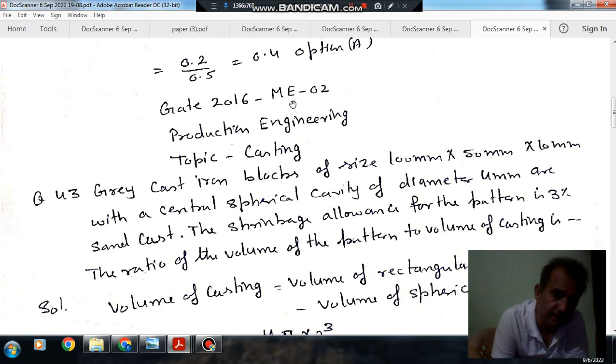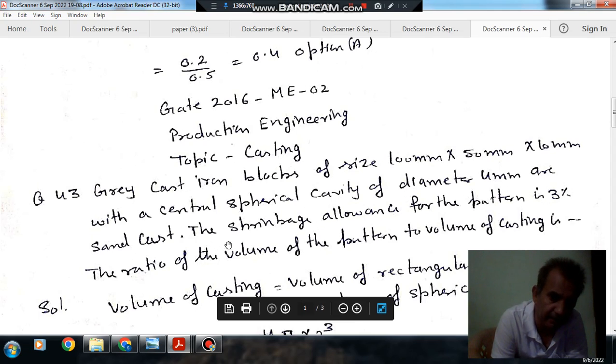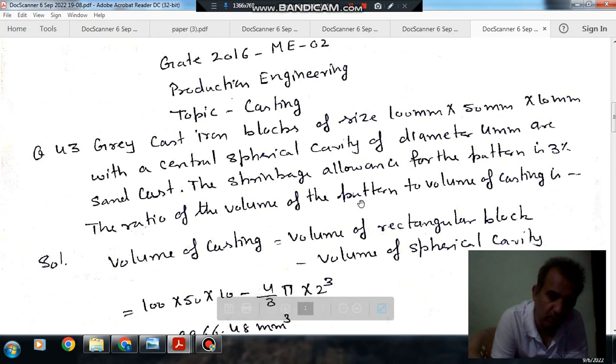Question number 43 from Gate 2016 ME 02-1. Gray cast iron blocks of size 100 mm x 50 mm x 10 mm with center spherical cavity of diameter 4 mm are sand cast. The shrinkage allowance for the pattern is 3%. The ratio of volume of pattern to volume of casting is there.